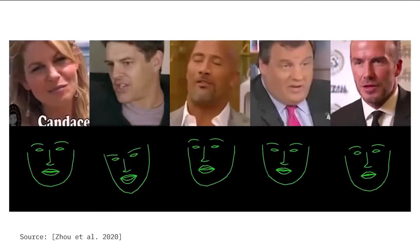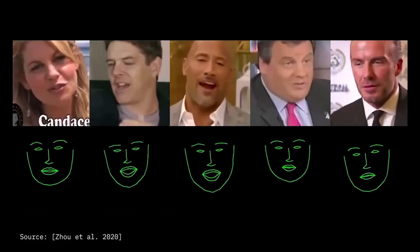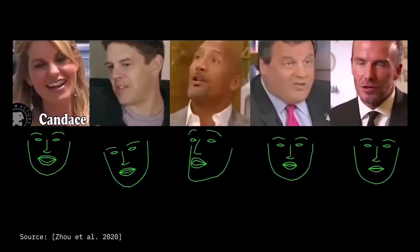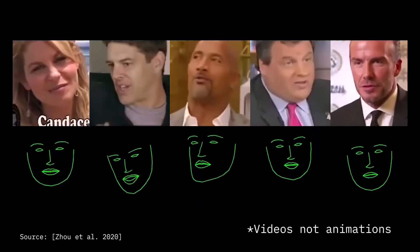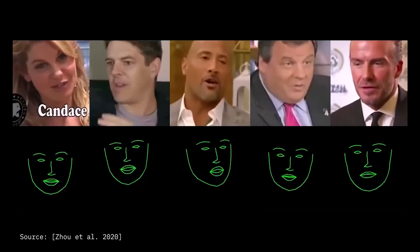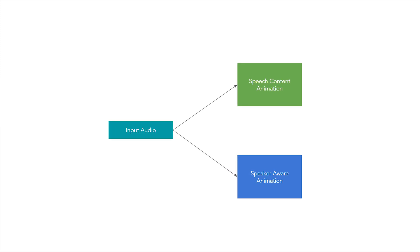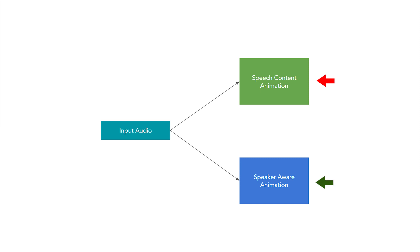Next, let's dissect how the authors were able to preserve expressions and speaker characteristics from the input audio. Needless to say, synthesizing realistic facial expressions and head movements, as we see in these animations, just from an audio input and a single portrait is extremely challenging. The trick in their technique is to disentangle the speech content of the audio from the expressions and head motion dynamics that the network can infer from the audio sample.